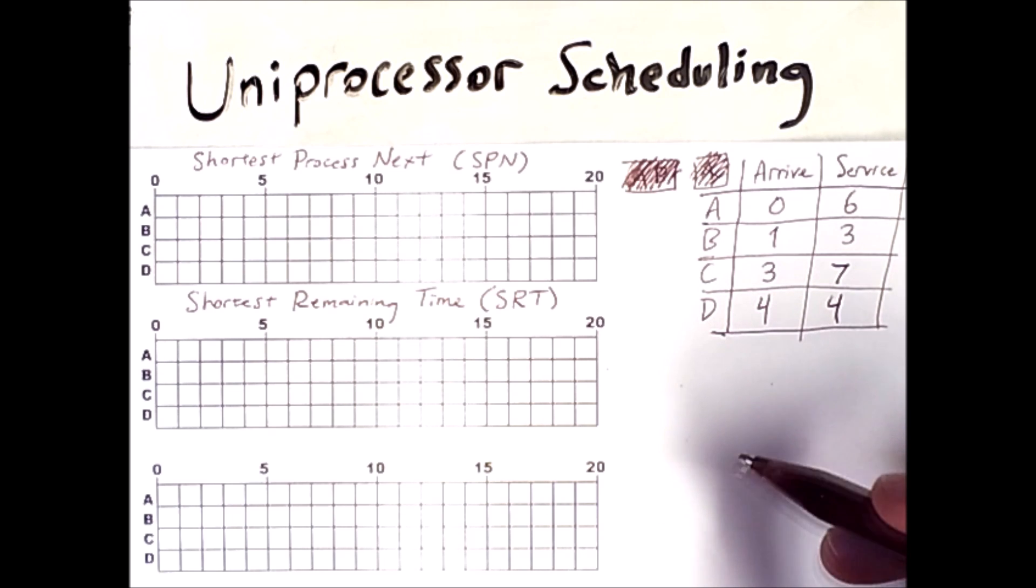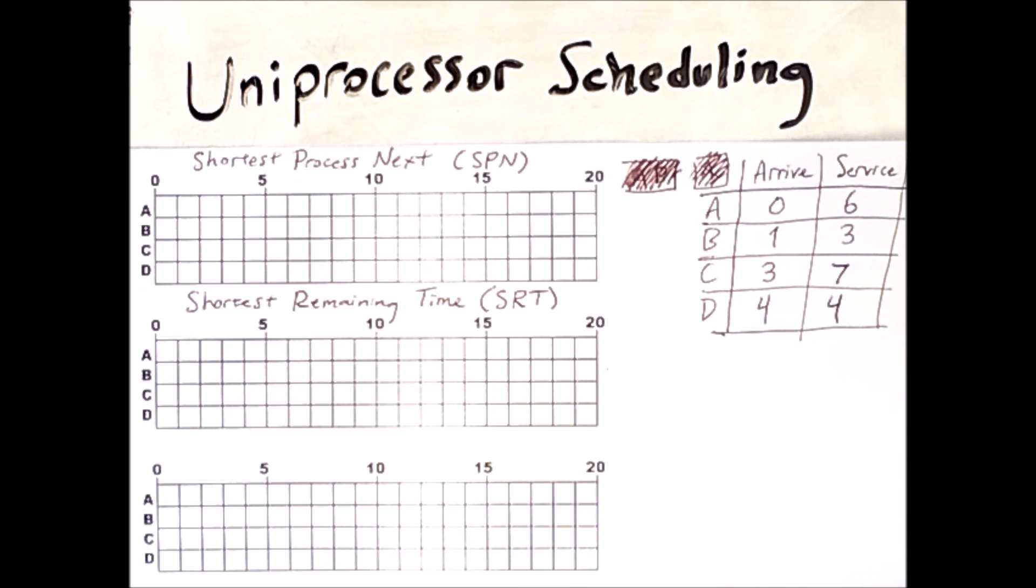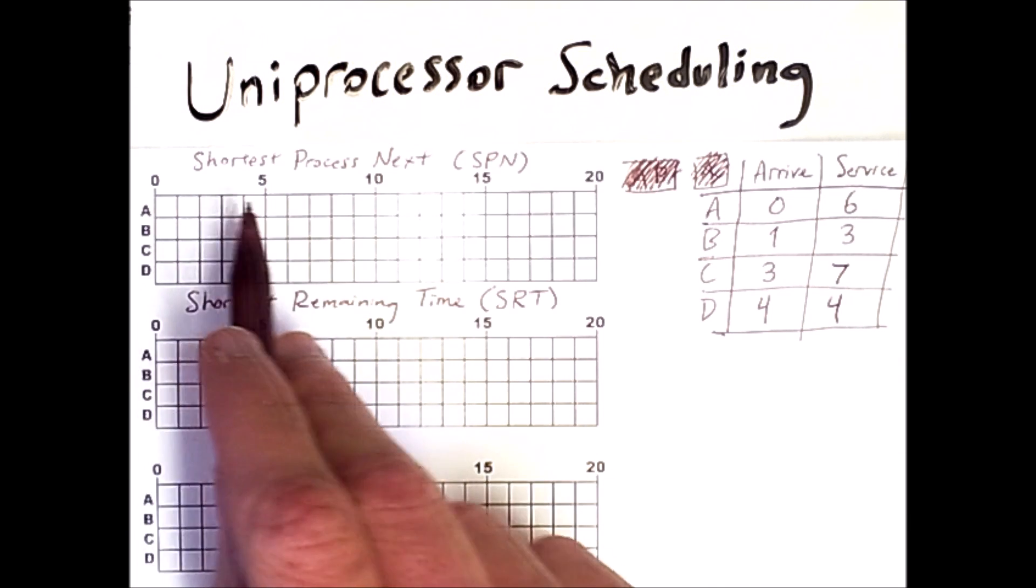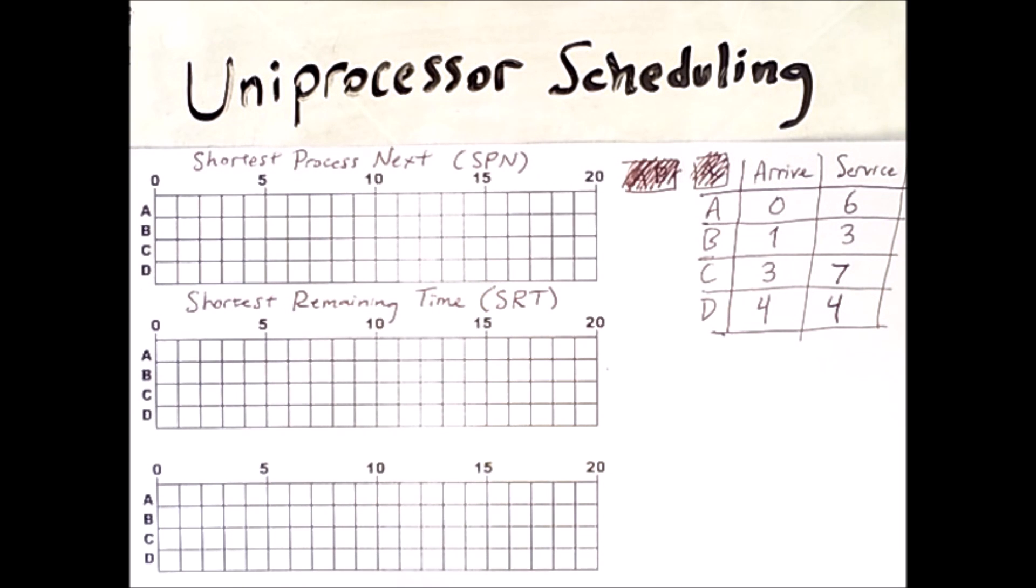The only difference between them is that one is preemptive and the other is not. A preemptive scheduling algorithm will kick a process off of the processor in the middle of executing in favor of another. We already saw this with the round robin scheduling algorithm. In contrast, first come first serve is not preemptive. So of these two, Shortest Process Next is the non-preemptive algorithm.